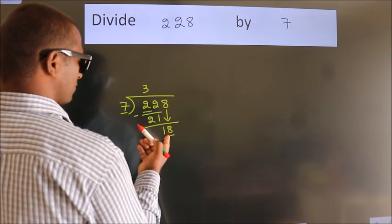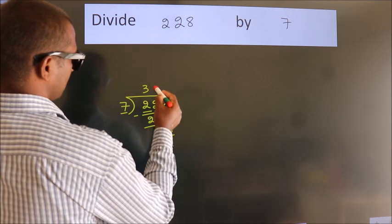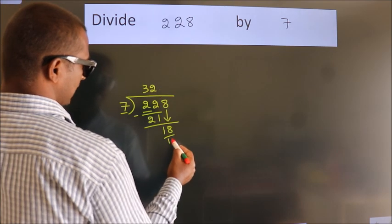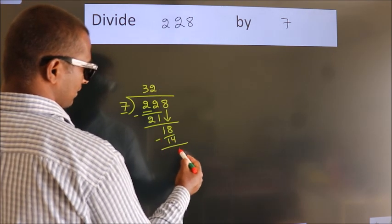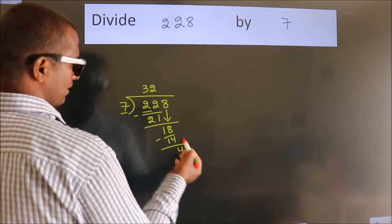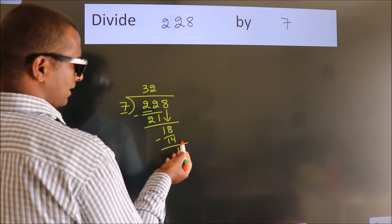A number close to 18 in 7 table is 7 twos, 14. Now we subtract. We get 4. After this, no more numbers to bring it down.